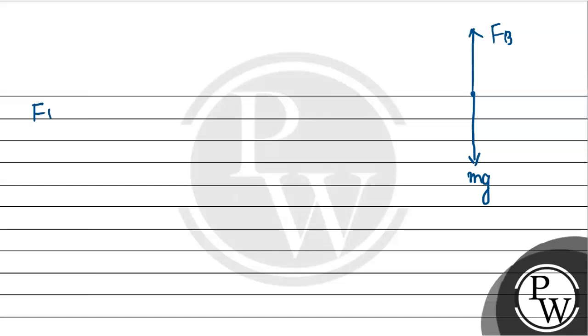So we would say Fb is equal to m into g. So Fb which is i into l into B is equal to mg. We have to find out the flowing current i. So that will be equal to mg divided by lb.